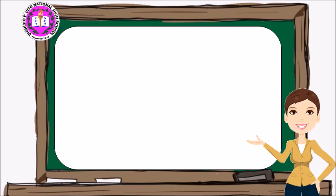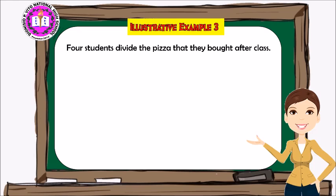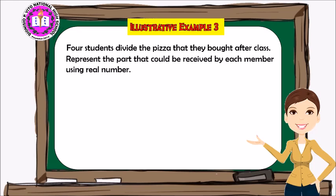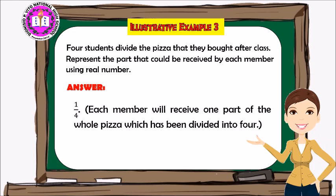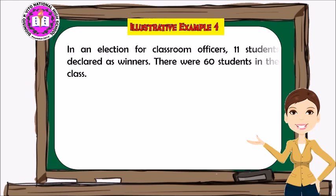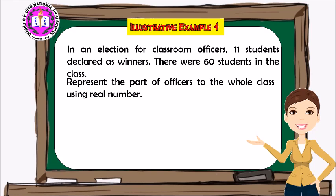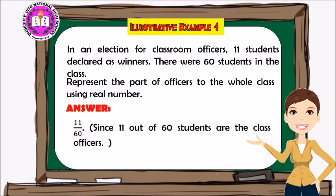Now let's look at examples of real-life situations involving real numbers. Illustrative Example 3: four students divide a pizza they bought after class — represent the part each member receives using real numbers. Answer: one-fourth, since each member receives one part of the whole divided into four. Another example: in a classroom election, 11 out of 60 students were declared winners — represent the part of officers to the whole class. Answer: 11 over 60.